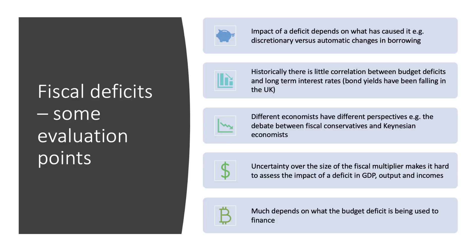The second evaluation point is that there's no obvious direct automatic correlation between how much the government borrows and the interest rate it has to pay on debt. Indeed, in the UK in recent years the yield on government debt has actually been falling, not rising, even though the government has been borrowing large amounts.